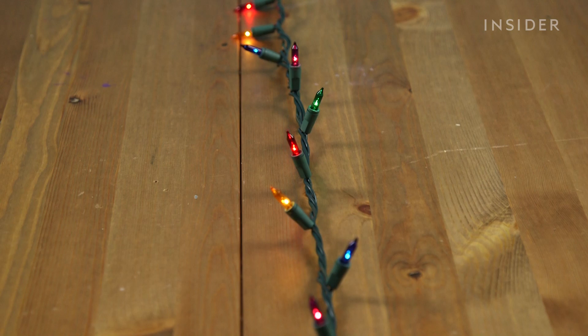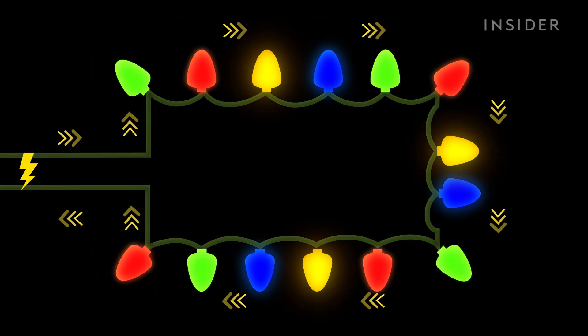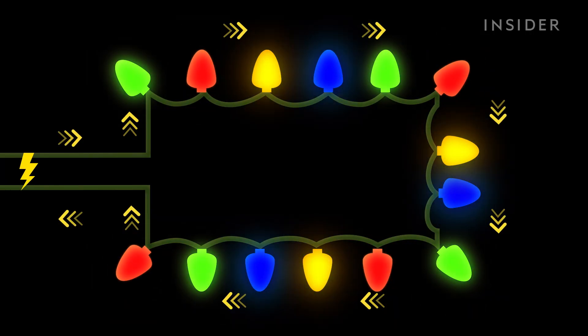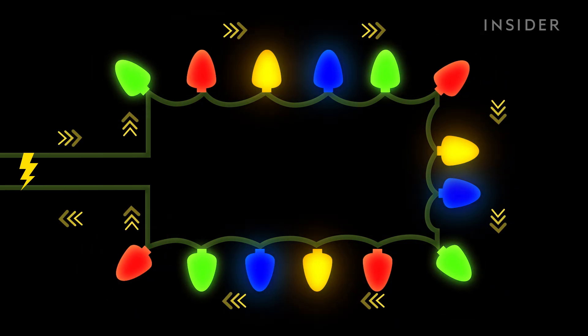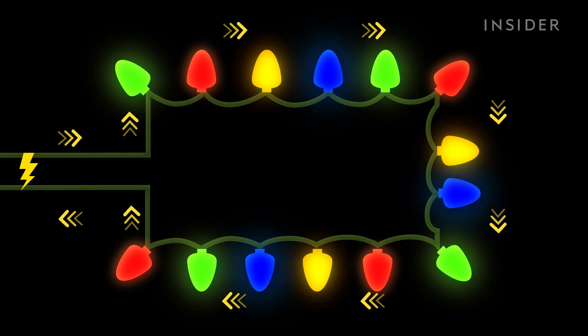In a series circuit, the current passes from the power source to the first light, then the next, then the next, and so on until it returns to the power source and completes the circuit.